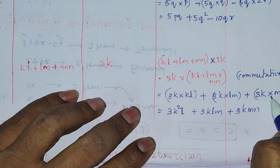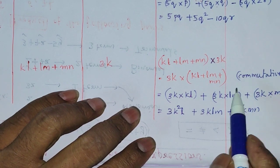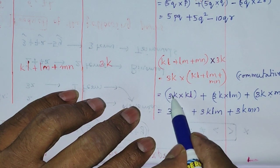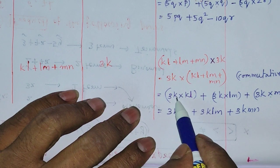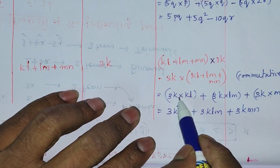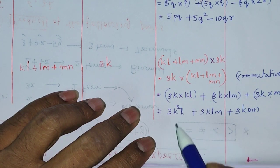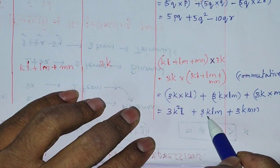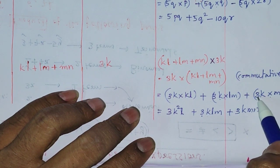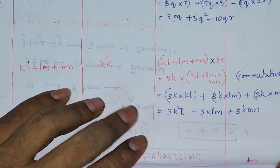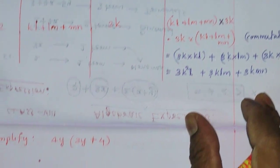To recap: 3 as the constant, k into kl gives k squared, with l remaining, so 3k²l. Then 3 times k into lm gives 3klm. And 3 times k into mn gives 3kmn. So the product is 3k²l plus 3klm plus 3kmn. Now let's move on to the next problem: simplify 4y into 3y.